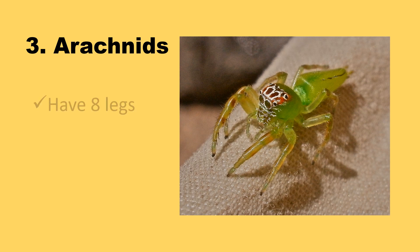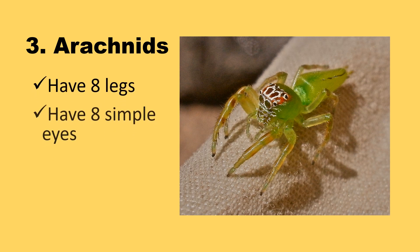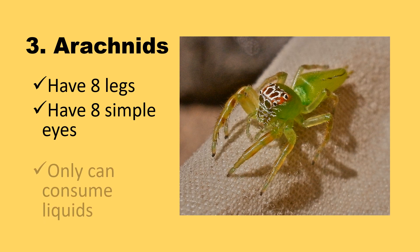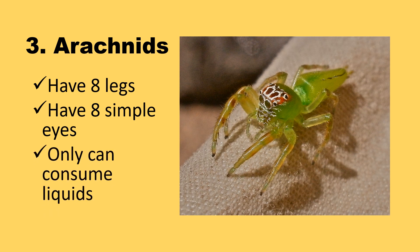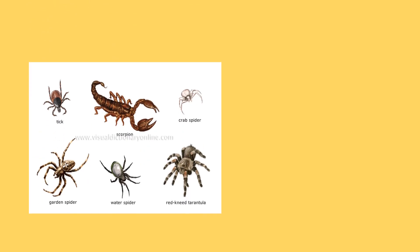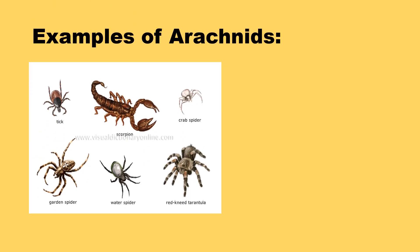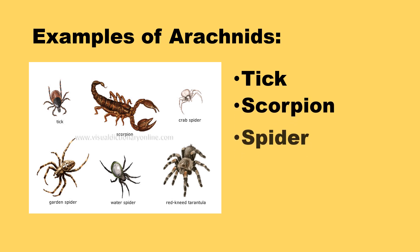Arachnids: they have eight legs, eight simple eyes, and can only consume liquids. Examples of arachnids are ticks, scorpions, spiders, and mites.